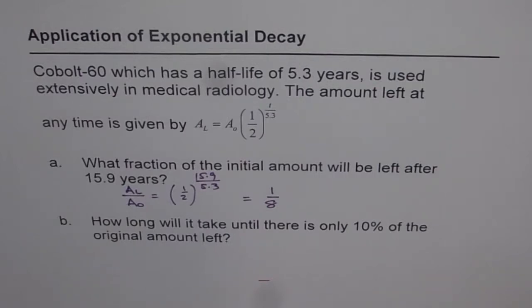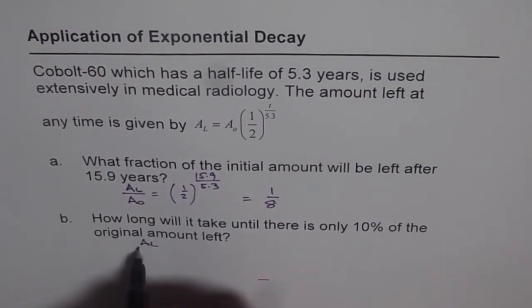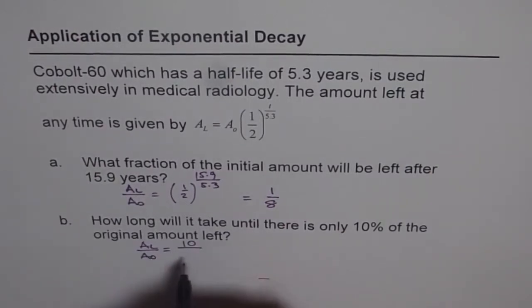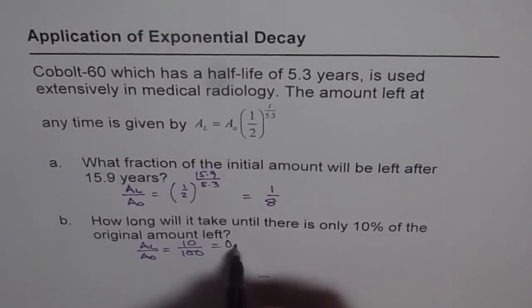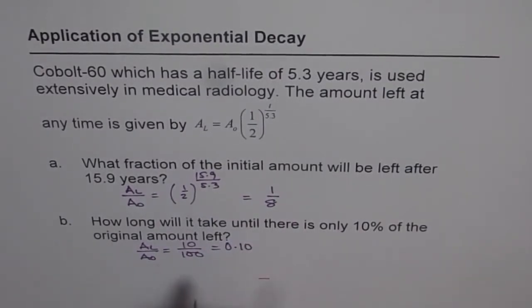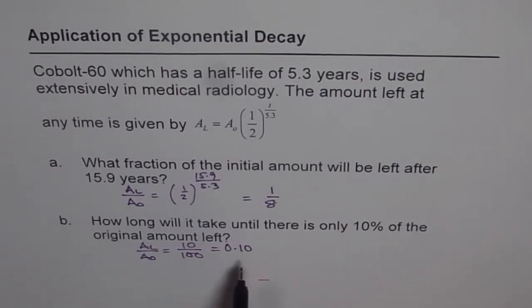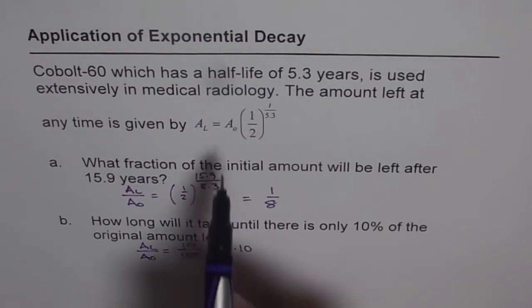Part B asks how long until there is only 10% of the original amount left. This means A_L/A_0 = 10%, which is 0.10. We need to find the time T, so we will substitute this into the formula.